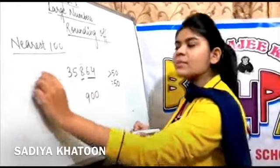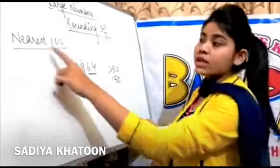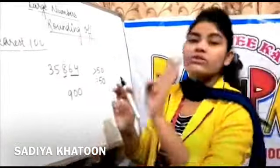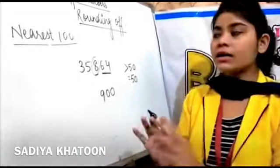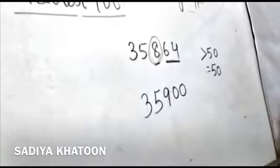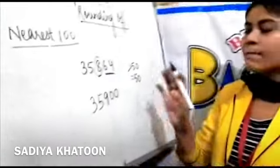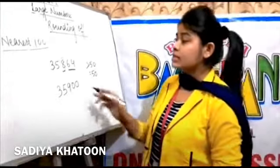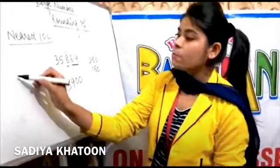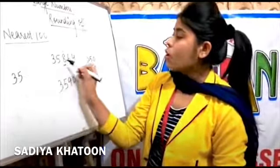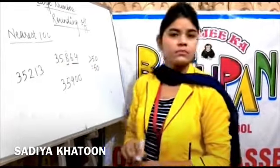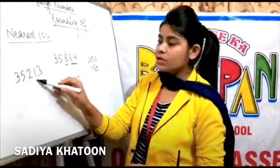The digits before the hundreds place remain as they are. So the answer is 35,900. Now let me take another example where you do not need to increase. Suppose the number is 35,213. Check the last two digits.